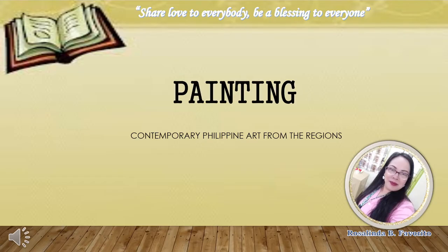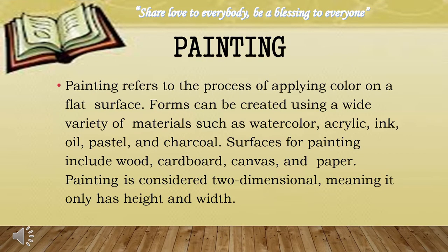The first traditional visual art form to be presented is painting. Painting refers to the process of applying color on a flat surface. Forms can be created using a wide variety of materials such as watercolor, acrylic, ink, oil, pastel, and charcoal. Surfaces for painting include wood, canvas, cardboard, and paper. Painting is considered two-dimensional, meaning it only has height and width.